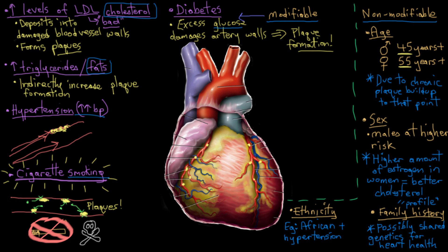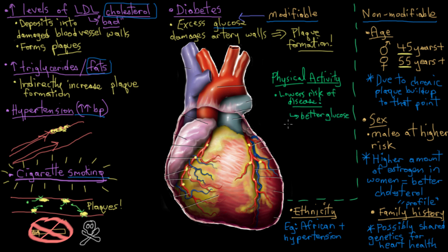In terms of lifestyle, increasing your level of physical activity can dramatically reduce your risk of developing coronary artery disease. When you exercise, you improve glucose levels in your blood, improve your cholesterol profile, use up fats, and lower your blood pressure. And statistically, if you're an exerciser, you're less likely to be a smoker. So just by getting exercise into your week, you're reducing all of these modifiable risk factors at once. Conversely, obesity or a distinct lack of physical activity increases your overall risk on top of these other modifiable factors.